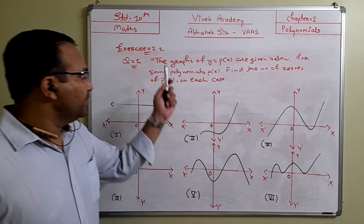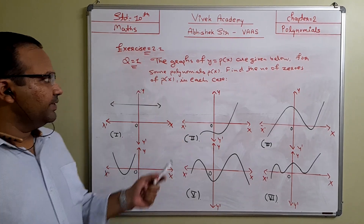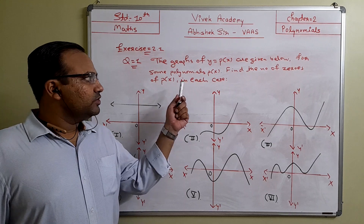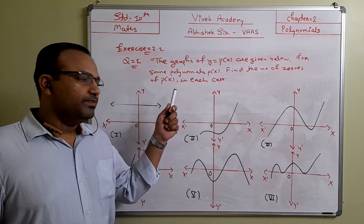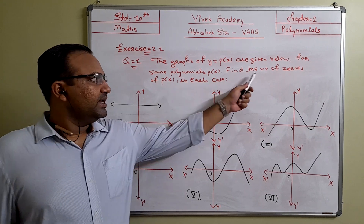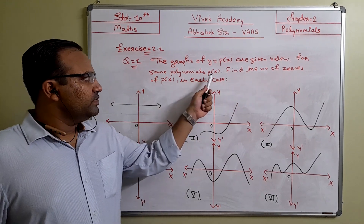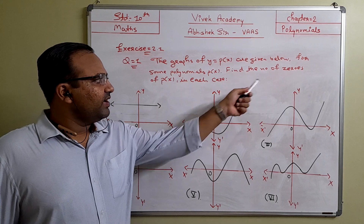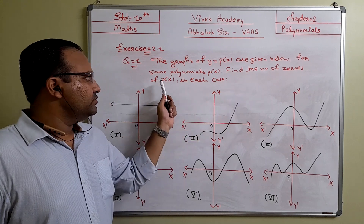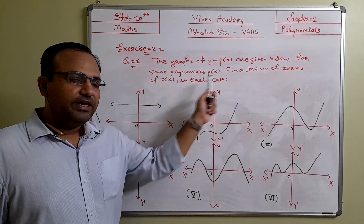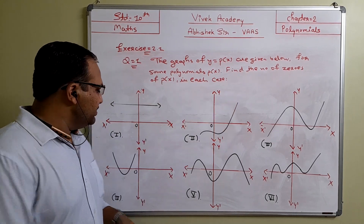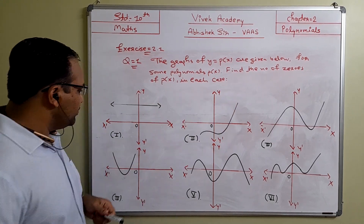Now Exercise 2.1, Question number 1. The graphs of y equal to p of x are given below for some polynomial p of x. Find the number of zeros of p of x in each case.